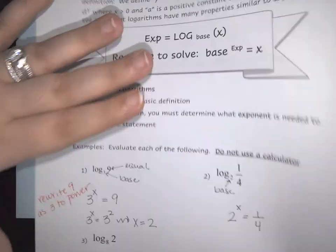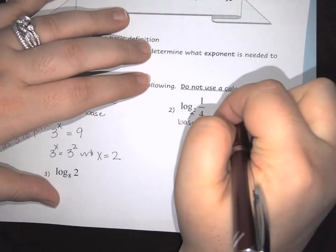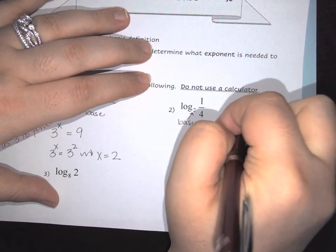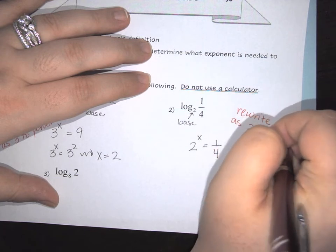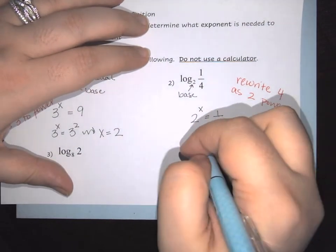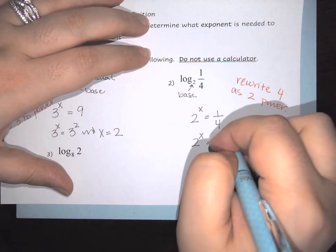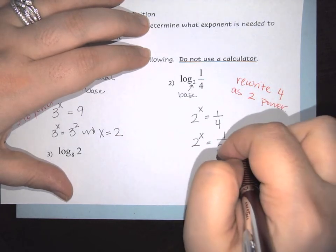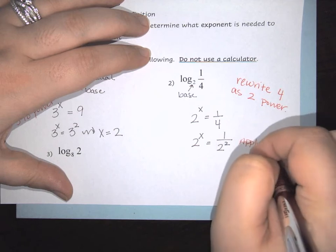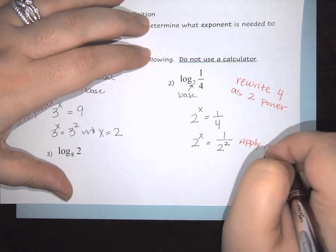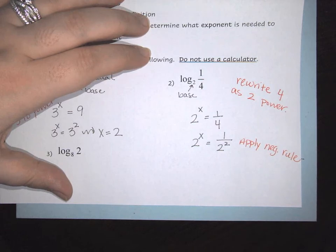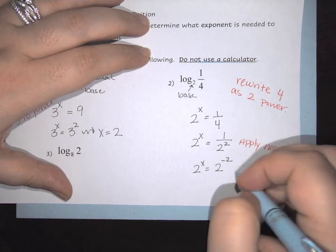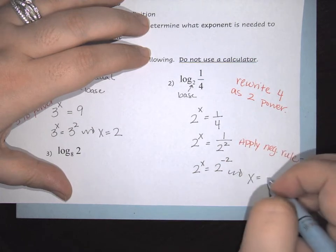Just like before, we want to rewrite the 4 as 2 to a power. In this case we would end up getting 2 to the x is equal to 1 over 2 squared. Here we would then apply the negative rule, which gives us 2 to the x is equal to 2 to the negative 2. So that tells us that x equals negative 2.